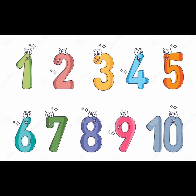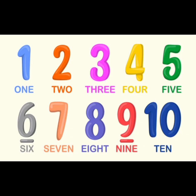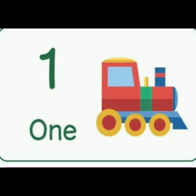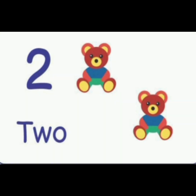Numbers — here is the chart we are going to learn about. 1 to 10: 1, 2, 3, 4, 5, 6, 7, 8, 9, 10. So let's start. 1 — 1 train. 2 —